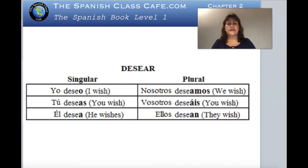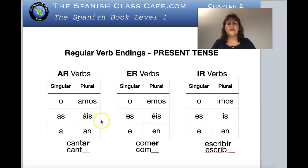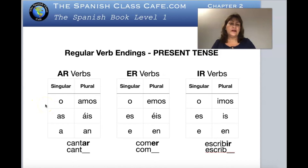It's nice to learn them all together, because if you memorize the -ar endings you basically memorize the -er and -ir as well, since they are very similar. I tell my students it's nice to compare them because it makes it easier when you're learning the whole complete present tense for regular verbs instead of parts. A lot of books teach the -ar first and later the -er or -ir, and then you get confused. Here you have the whole picture.